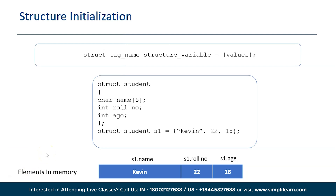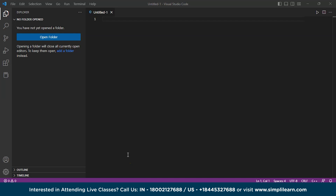So that's how you can initialize the structure and access the data elements from it. Now let us jump directly into Windows Visual Studio Code and try to understand how structures work with the help of some examples. Visual Studio Code has started, so let's execute a simple structure example where we will create an employee structure and store its details.